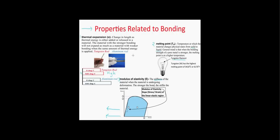To summarize: as bond strength goes up, the coefficient of thermal expansion — or thermal expansion in general — will go down. As bond strength goes up, the melting point will also go up. And finally, as bond strength goes up, so does the modulus of elasticity.